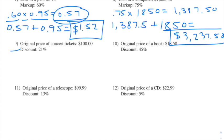Now we're going to be focusing on discounts. With markups we were adding that percentage to the original price; now with discounts we subtract it. Number nine: the original price of a concert ticket is $100 and the discount is 21%. This is an introduction to percents and discounts, so don't worry if it's new.